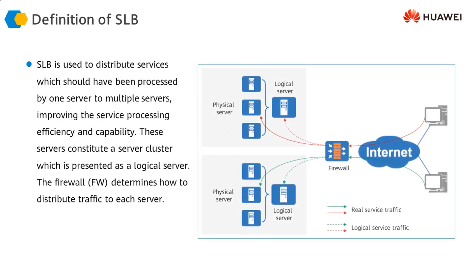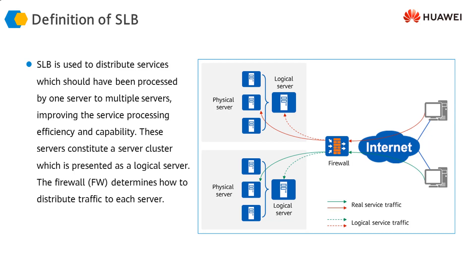If you have different physical servers all providing the same service, any request coming in from users for that service needs to be shared by all those servers. The firewall sitting at the egress of the network is responsible for distributing the incoming traffic across all of these servers, so that all traffic does not go to a single server.